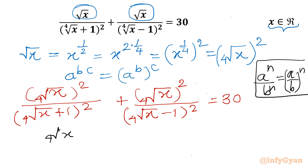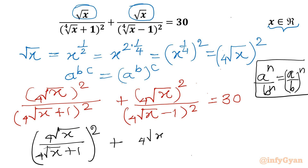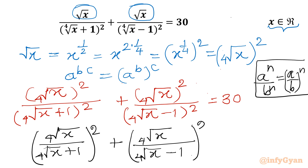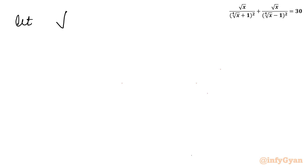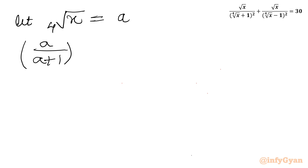Using that property, I will write: fourth root of x divided by fourth root of x plus one, whole square, plus fourth root of x over fourth root of x minus one, whole square, equal to 30. Now I will use the substitution: let fourth root of x equal to a. So our equation becomes: a over a plus one, whole square, plus a over a minus one, whole square, equal to 30.